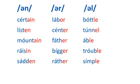Let's practice saying these words with un, er, and ul. Certain. Listen. Mountain. Raisin. Sadden. Labor. Center. Father. Bigger. Rather. Bottle. Tunnel. Able. Trouble. Simple.